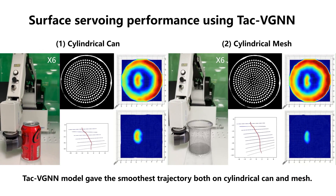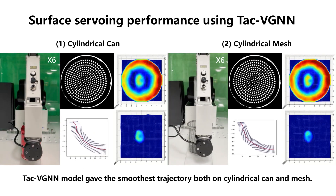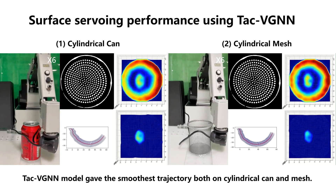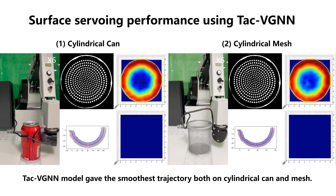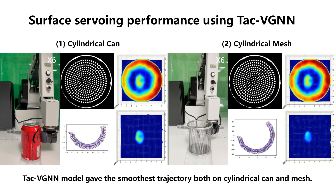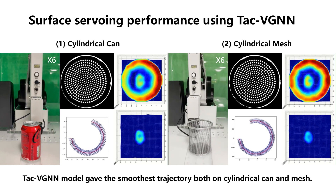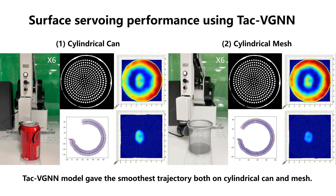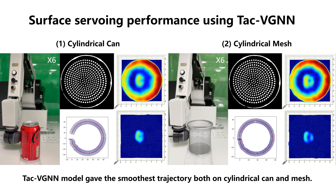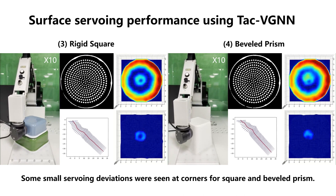Here are some real demonstrations showing the servoing performance of TAC-VGN. The experiments were conducted using five types of objects for a surface following task. The experimental results show that TAC-VGN can servo smoothly both on the cylindrical can and the cylindrical mesh, although their textures are totally different. It also performed well on the square and the beveled prism.